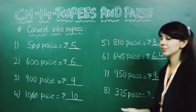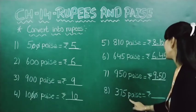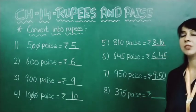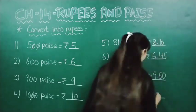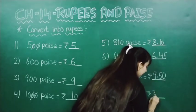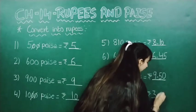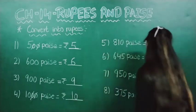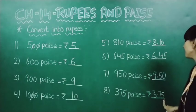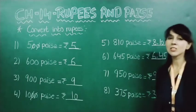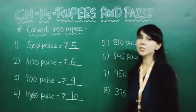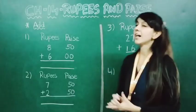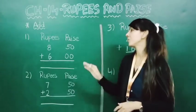Now 375 paise. Here also we will do the same thing — we will just place a point after 3, and here we will write 75. So this becomes 3 rupees 75 paise. Now students, understood how to convert paise into rupees? Now we will see addition of rupees and paise.